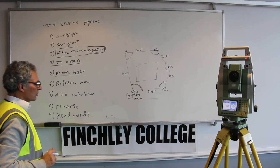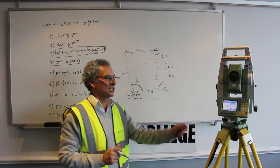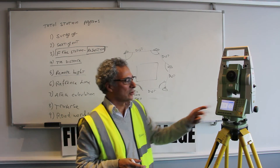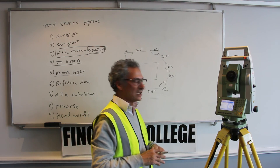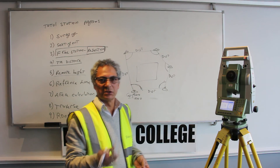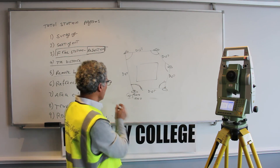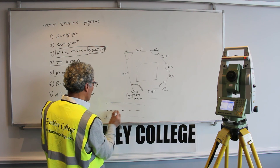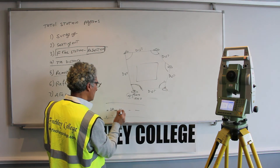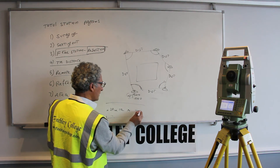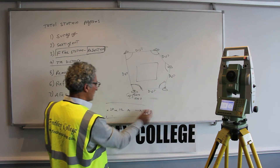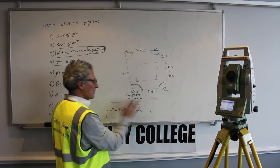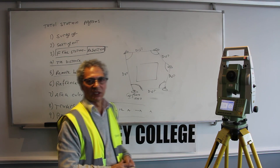The next program is roadworks. Some total stations have this program, some don't. Roadworks essentially means you give the line chainage for the centre of the road — you have a road with a centre line, and you give a chainage every 10 metres with the coordinates and heights for each point, and it will help you set out the road.